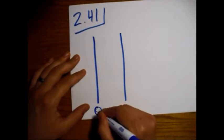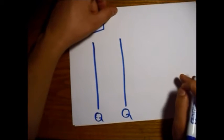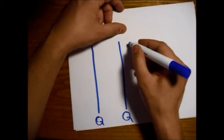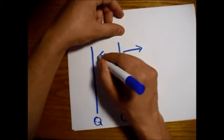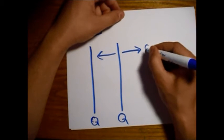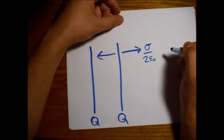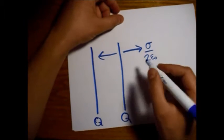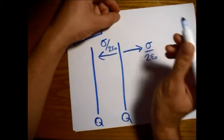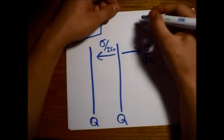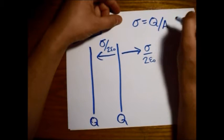And there's a charge of big Q on each one. And then, the electric field will come out in each direction with a strength of sigma over 2 epsilon-naught. So from this plate, and sigma equals Q over A.